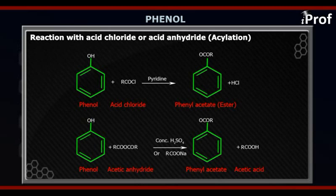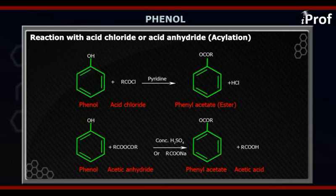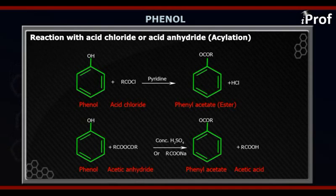We have phenol reacting with RCOCl — RCOCl is a carbonyl compound. Phenol has lone pairs, so these lone pairs will function as a nucleophile. Therefore, we get the attack of the lone pairs of phenol on the carbonyl group, and the intermediate formed is as shown on the screen.